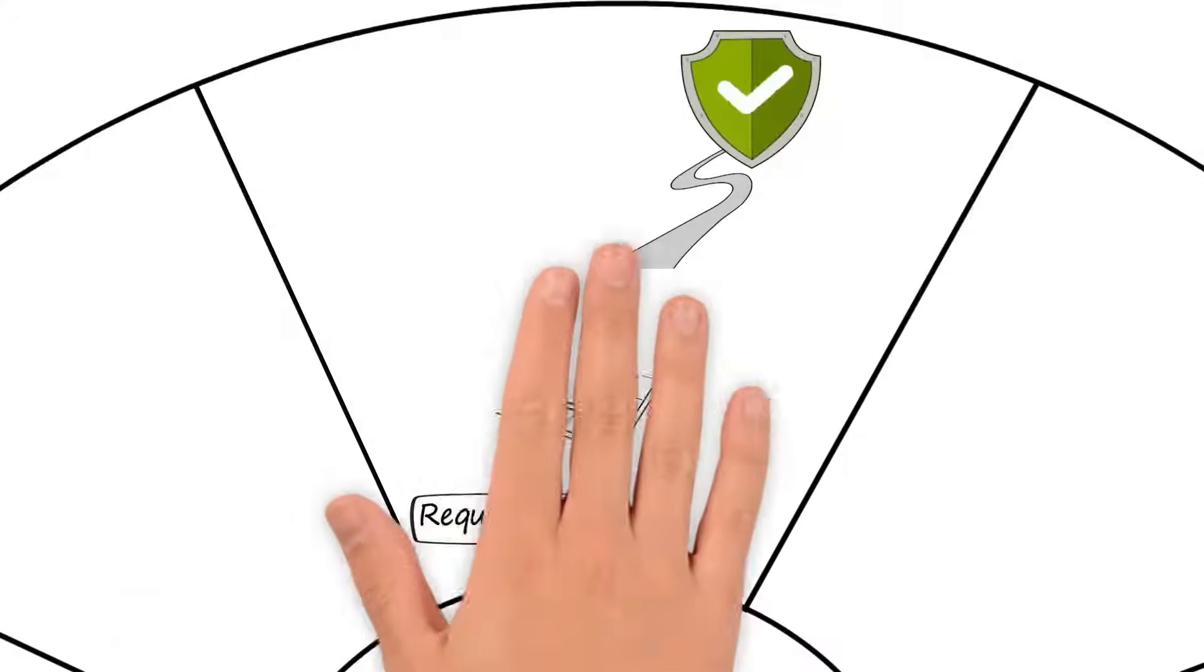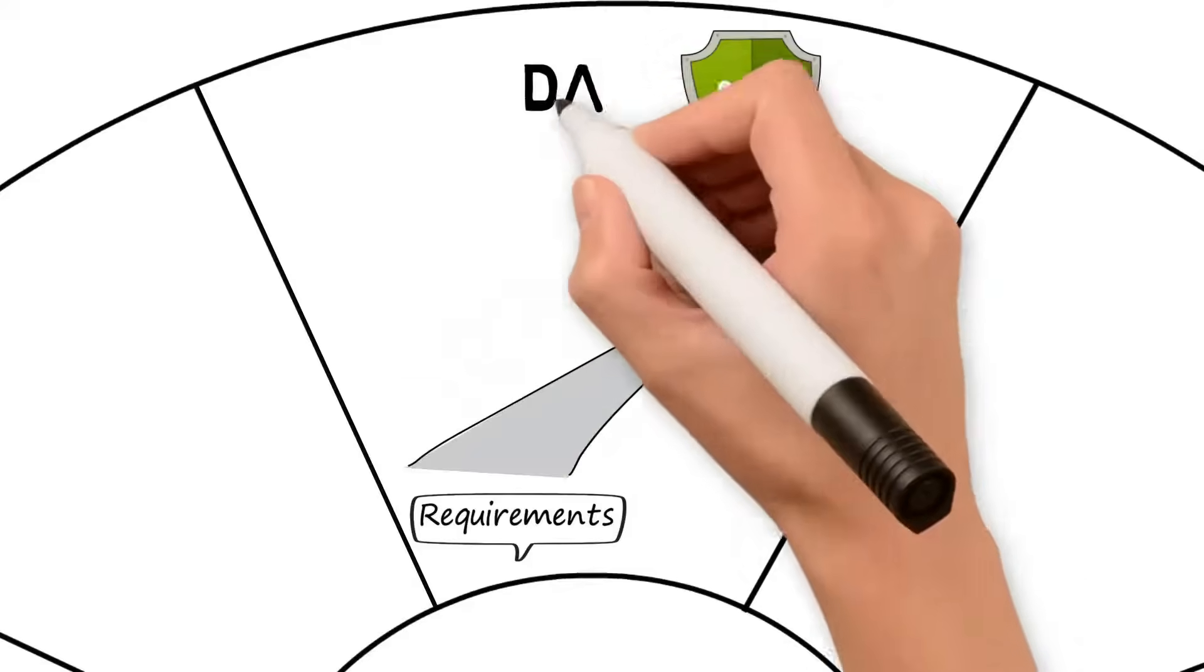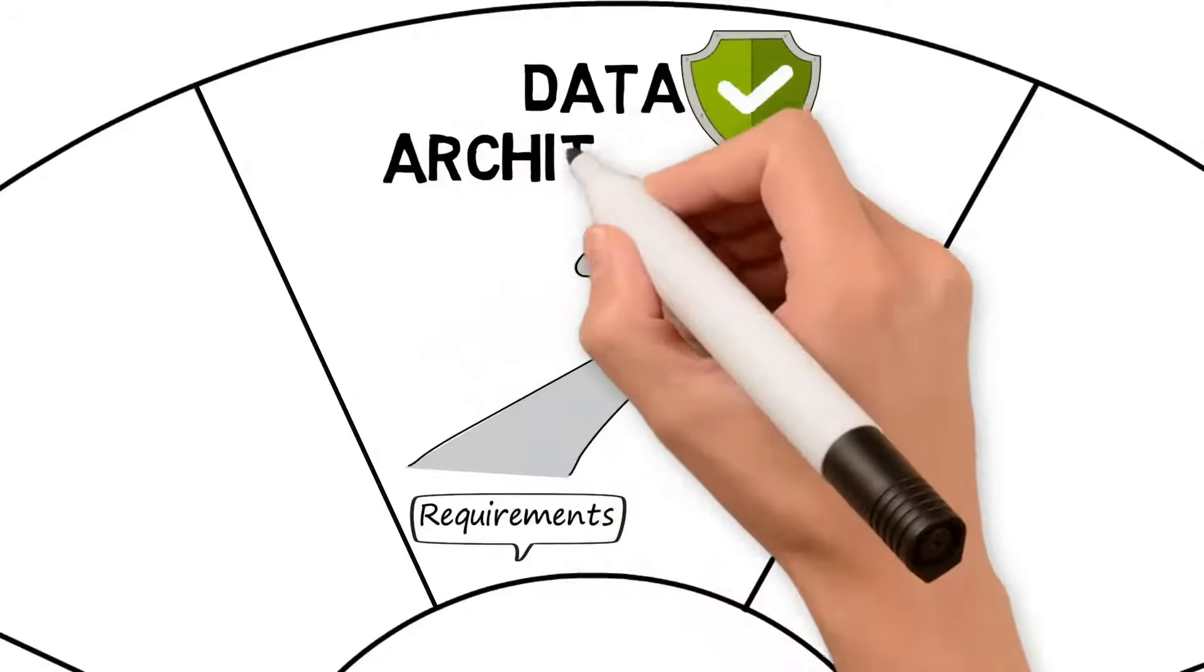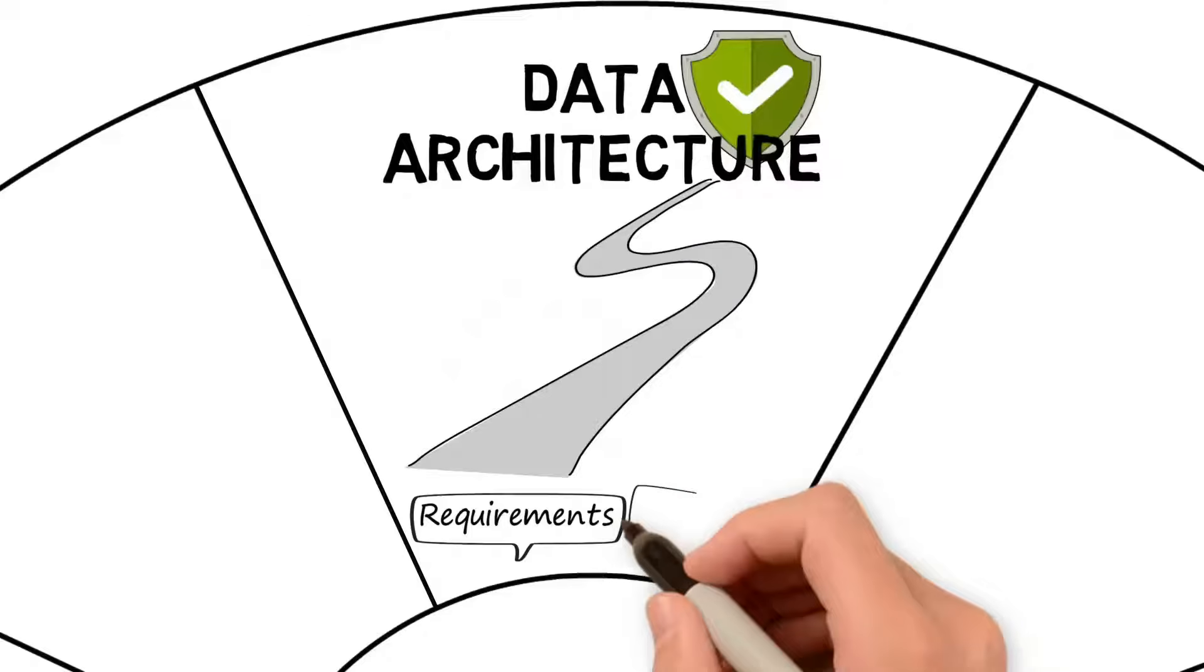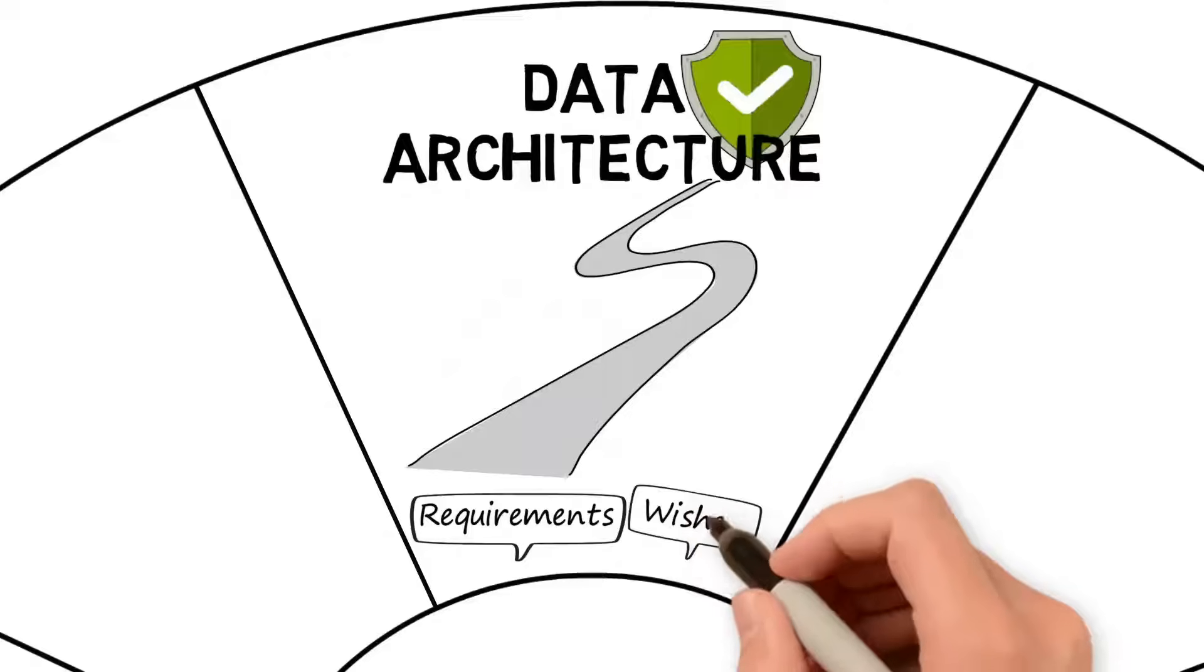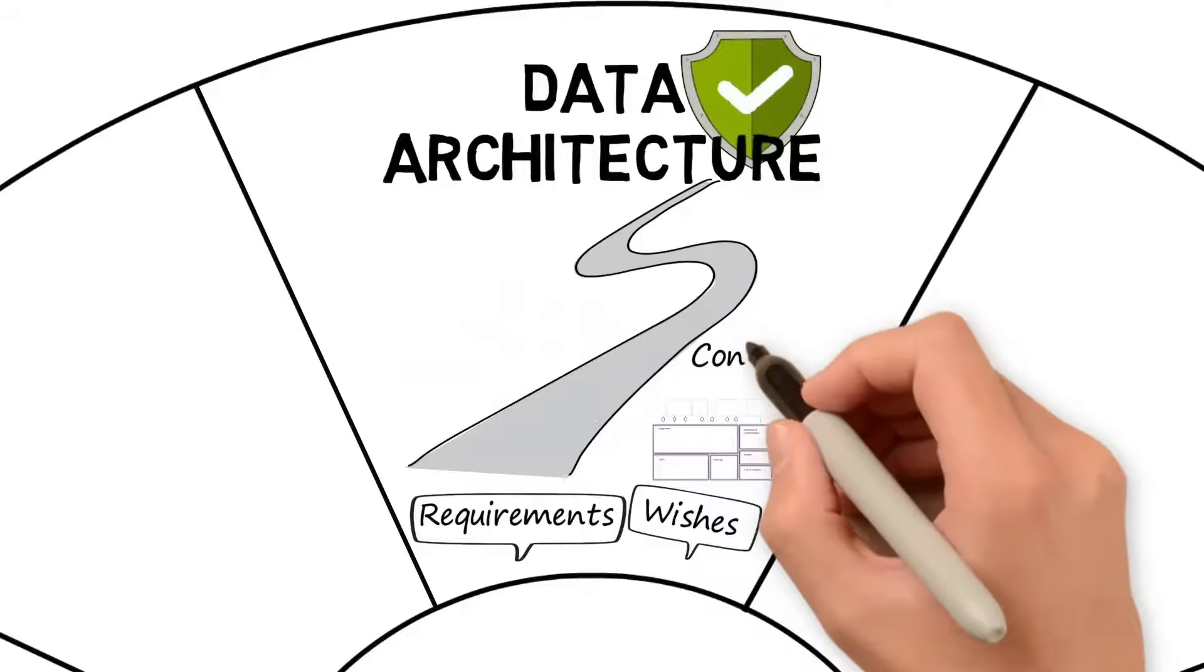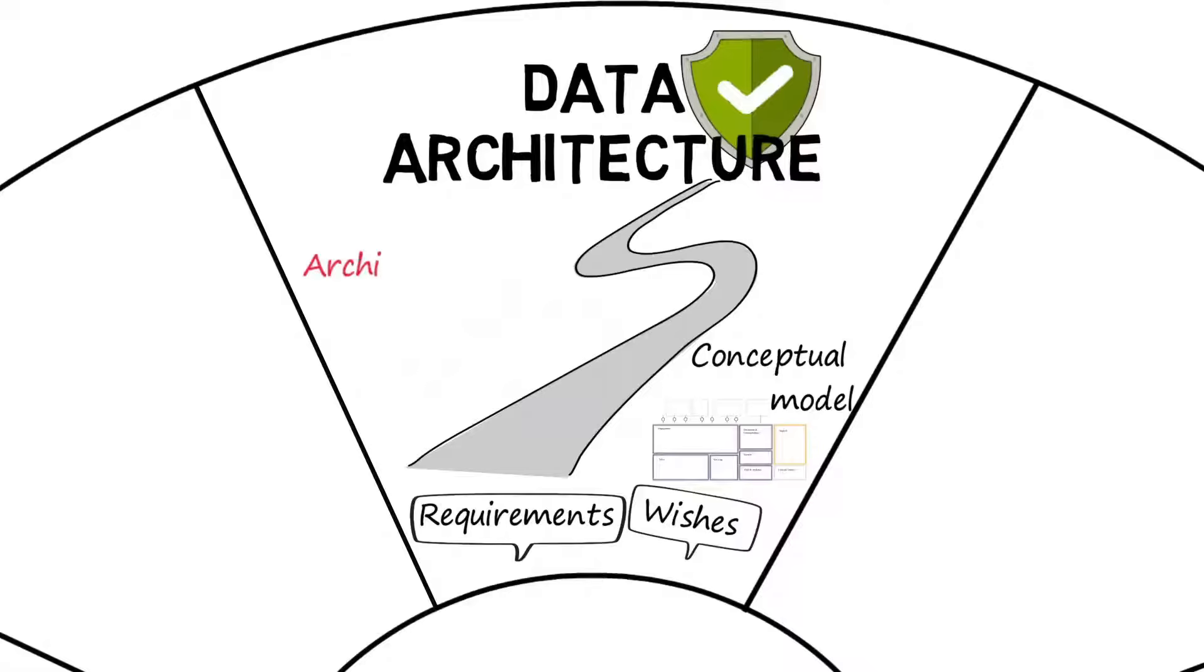There are many similarities between the construction business and data management. In data management we also create a plan, known as the Enterprise and Data Architecture, that serves to achieve the set vision. Requirements and wishes are collected and translated into conceptual plans, designs or models, anticipating on the data architecture principles.